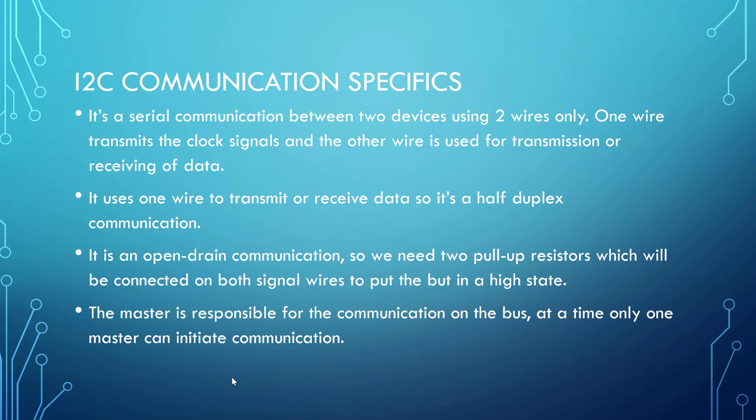I2C is serial communication using two wires. One wire is named SCL for clock signals and another is SDA for data transmission or receiving. It uses one wire to transmit or receive data, so it's half duplex communication. Previously in serial tutorials we used full duplex communication because it uses separate transmit and receive wires; here we use a single wire for both.